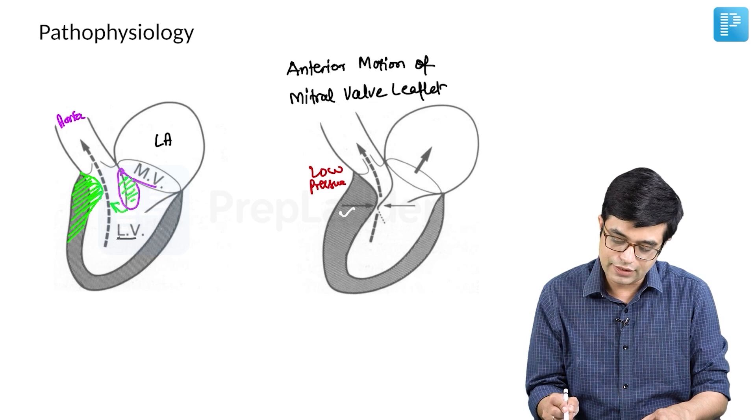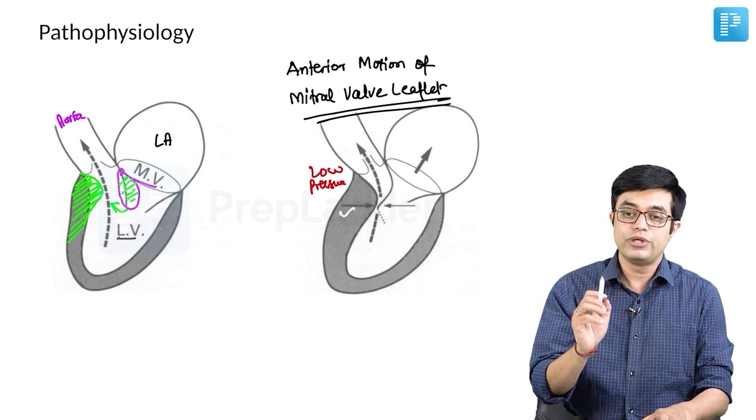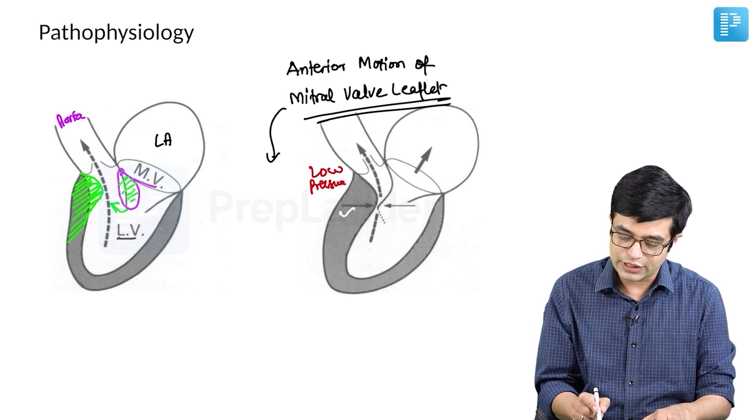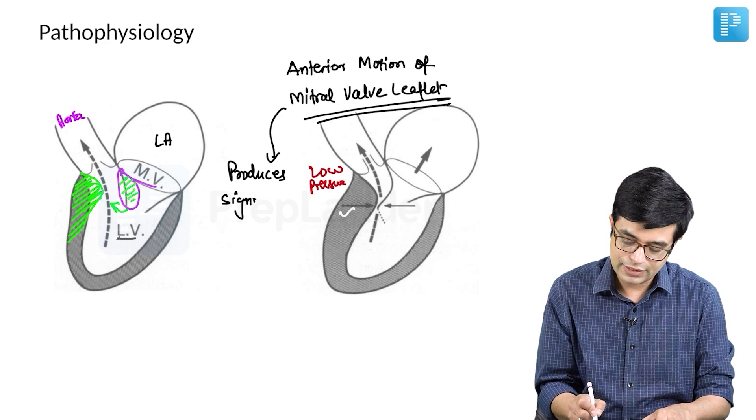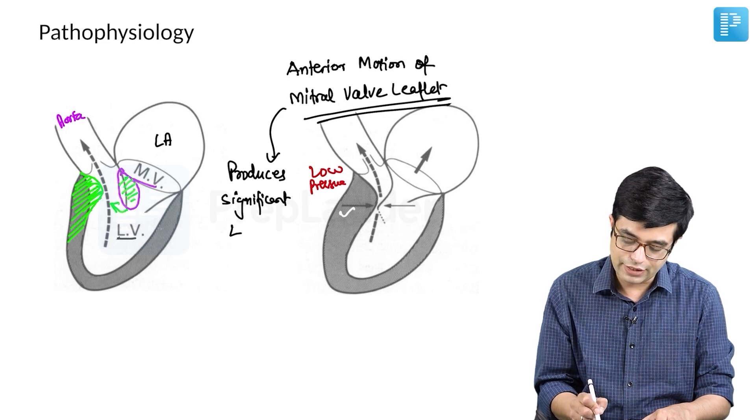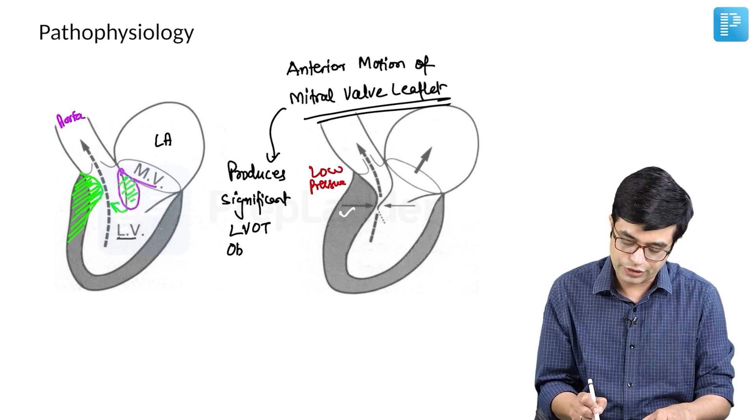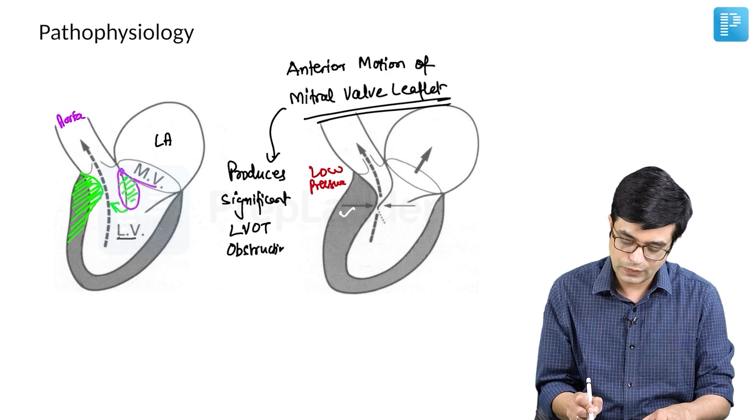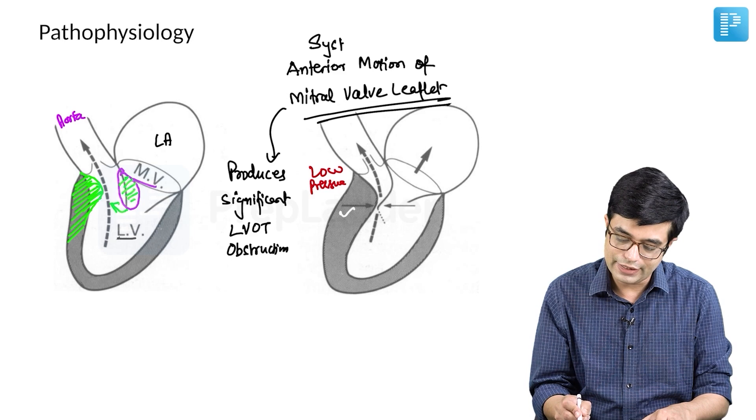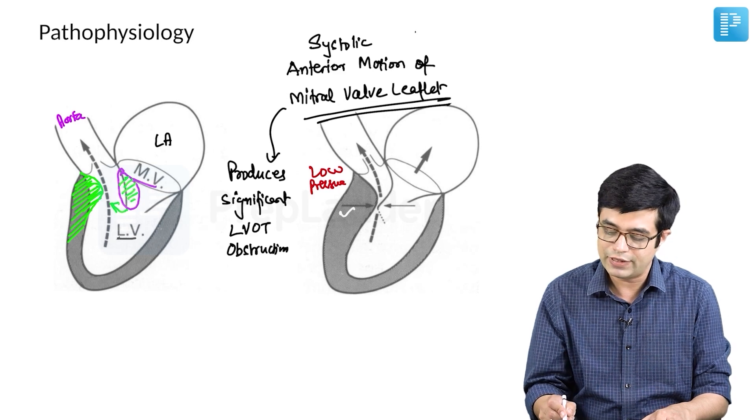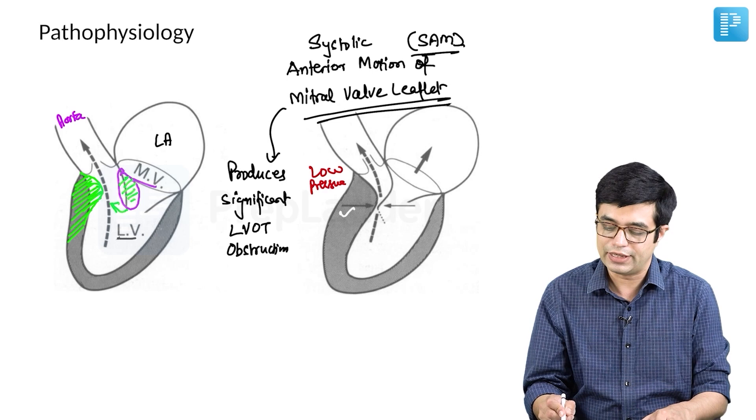systolic anterior motion of mitral valve leaflet. So this occurs due to Venturi effect and this produces a significant left ventricle outflow tract obstruction. It is also called as systolic anterior motion of mitral valve leaflet or SAM of mitral valve leaflet.